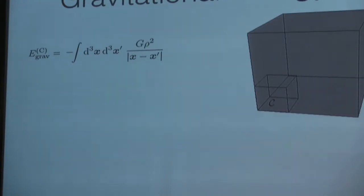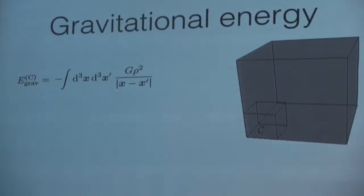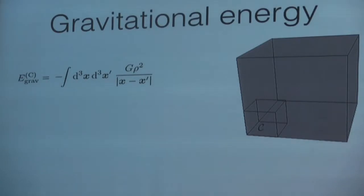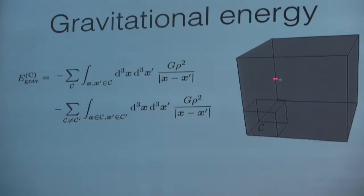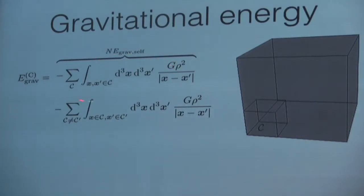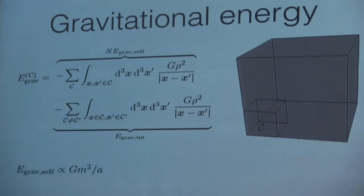Working the same way as in the derivation of the Friedmann equation, I will compare the kinetic energy and the gravitational energy of the two models. Starting with the gravitational energy of the continuous model — given by the standard integral — I can divide it into two contributions: one where the two integration points belong to the same cell (the self-gravitational energy of a cell), and one where they belong to two different cells (the interaction gravitational energy between cells).